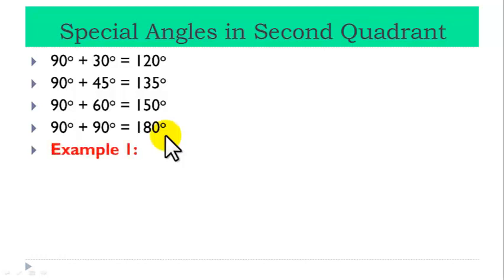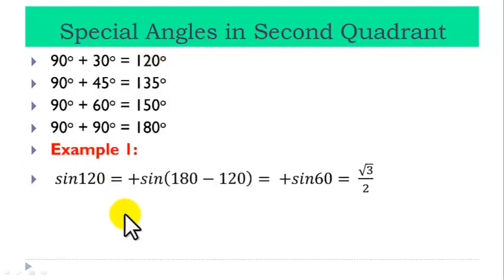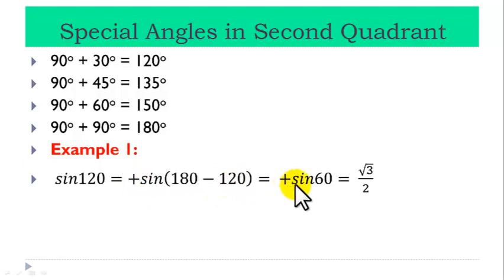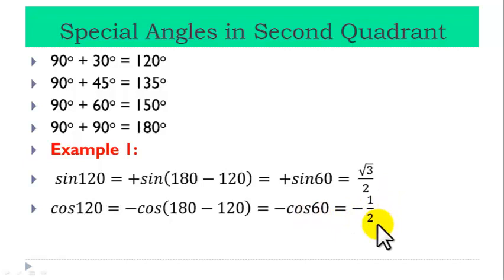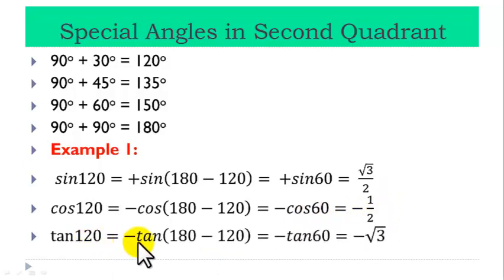Example 1: Let us find the trig ratios for 120 degrees. Sine 120 equals plus sine of (180 minus 120). Recall, only sine is positive in the second quadrant. So this equals plus sine 60, which is root 3 over 2. Cos 120 equals minus cos of (180 minus 120), giving minus cos 60, which equals minus one half. Tan 120 equals minus tan of (180 minus 120), giving minus tan 60, which equals minus root 3.